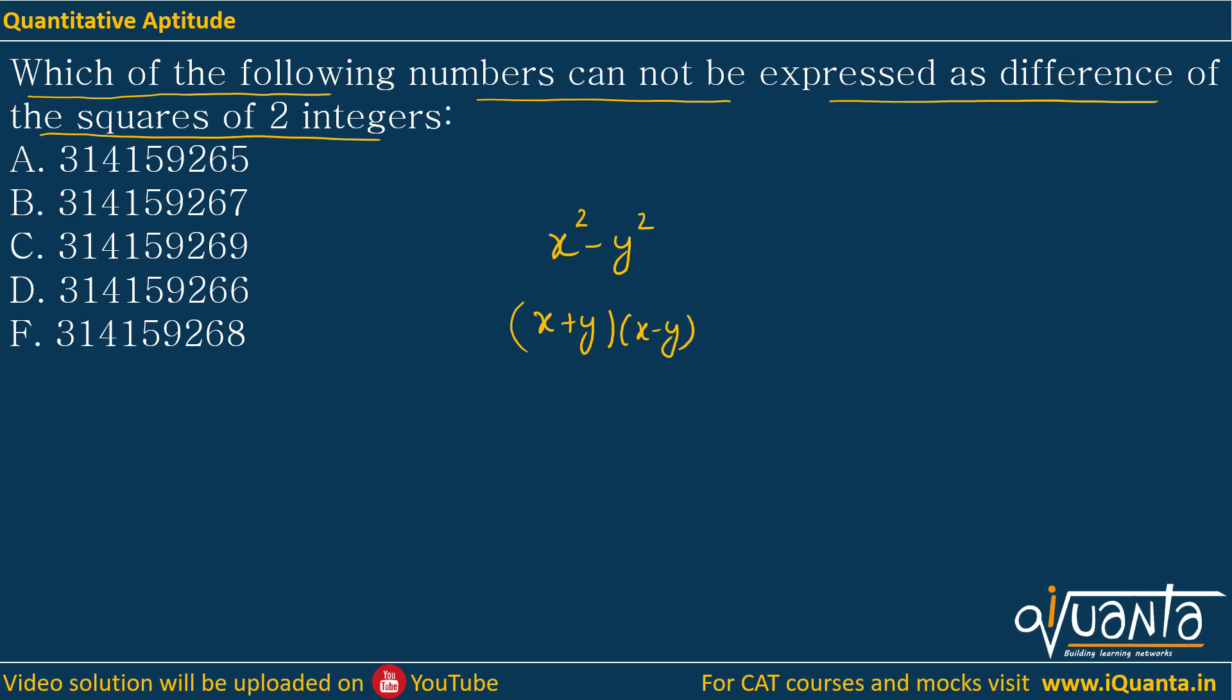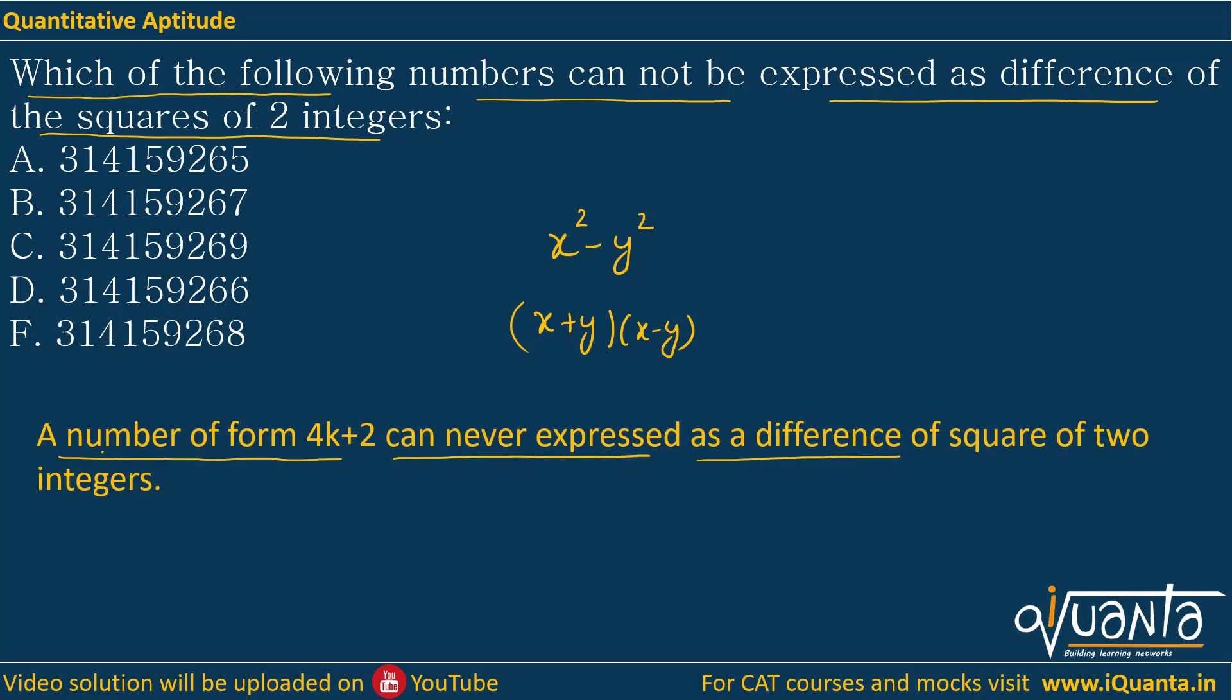Whenever you come across such a question, there's a rule you need to remember: a number of form 4k+2 can never be expressed as a difference of squares of two integers. In the question, we are looking for that number which cannot be expressed as a difference of square of two integers. So among the options, we have to search for that particular number which is of form 4k+2.